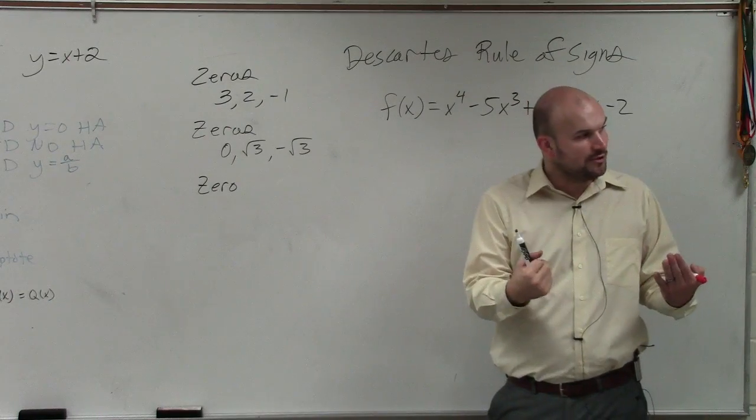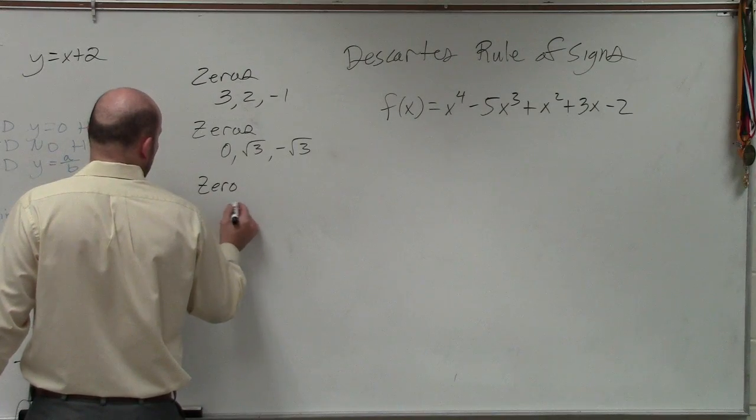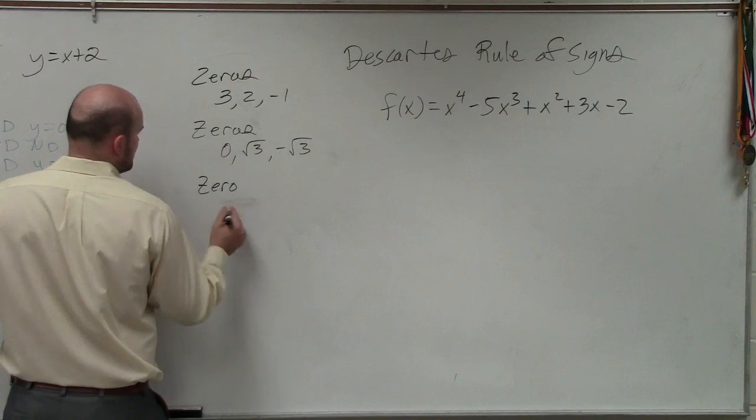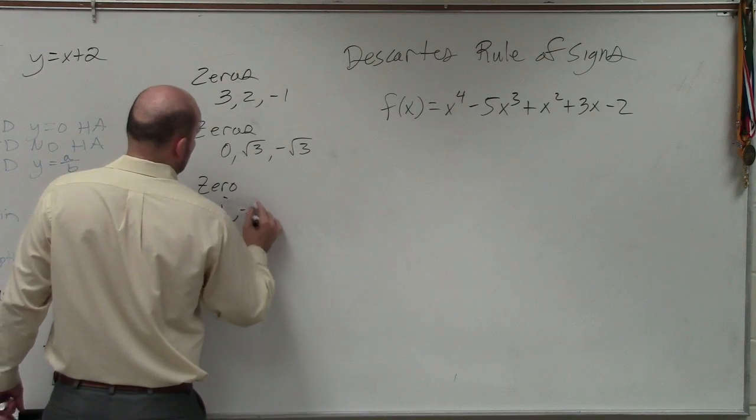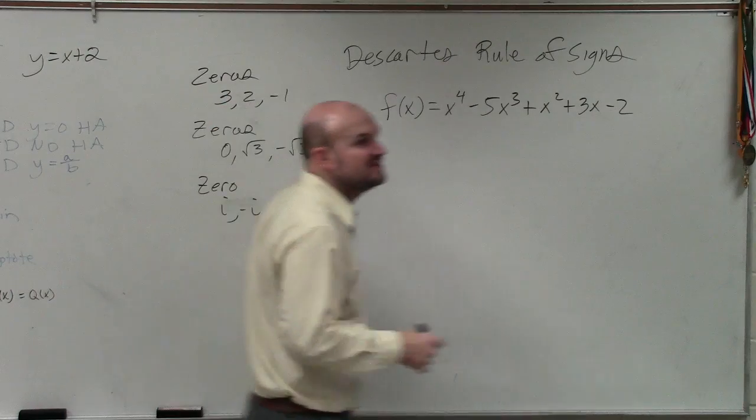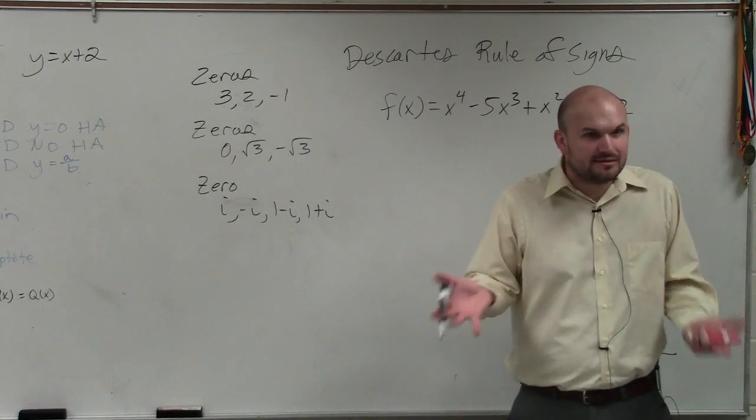In the last homework, we found and wrote polynomials when we had i, negative i, 1 minus i, 1 plus i - when we were given complex zeros. We talked about i last class period.